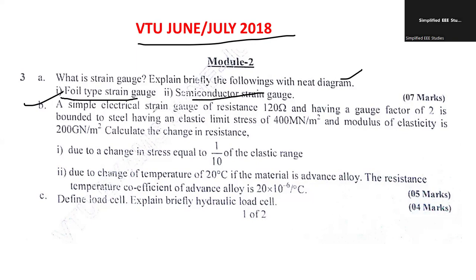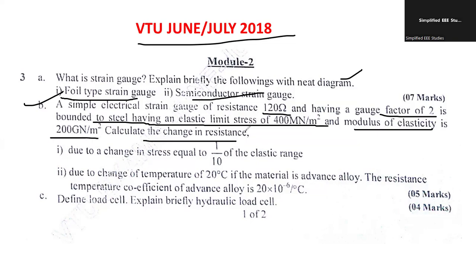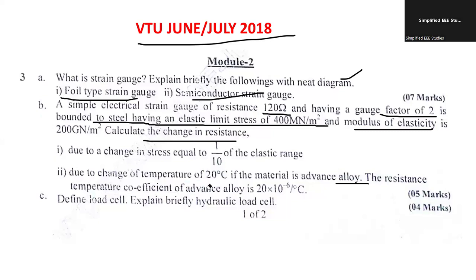Another question is a numerical example: a simple electrical strain gauge with a given resistance, gauge factor GF = 2, bonded to steel with an elastic limit stress of 400 MN/m², and modulus of elasticity of 200 GN/m². Calculate the change in resistance delta R due to a change in stress equal to 1/10th of the elastic limit, and due to a temperature change of 20°C. If the material is an alloy, the temperature coefficient of resistance is 20 × 10⁻⁶ per degree Celsius. Note down all the given data.